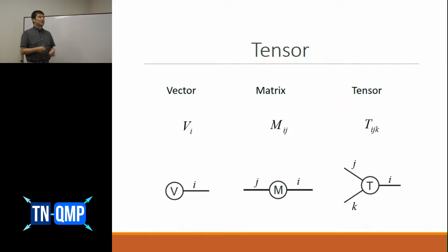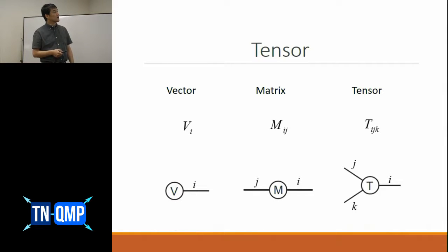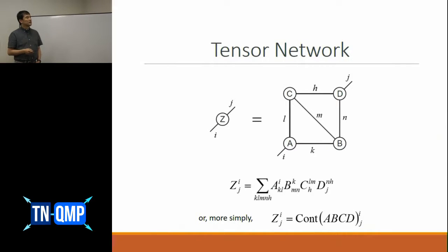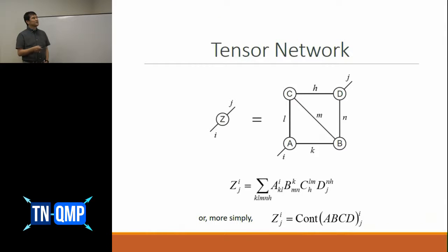A matrix naturally has two indices and two legs, so a matrix is represented by a diagram with two legs. A rank-3 tensor is represented by a diagram with three legs. The notation should be pretty obvious. A tensor network is something like this — this is a part of a tensor network. If you want to express this in a conventional formula, it would look like this: a tensor contraction, say Z_ij, is a partial contraction of four tensors.